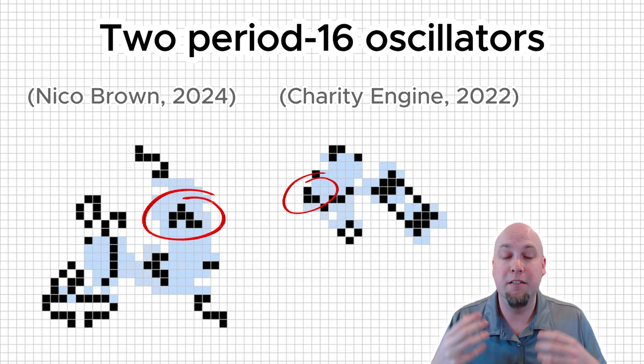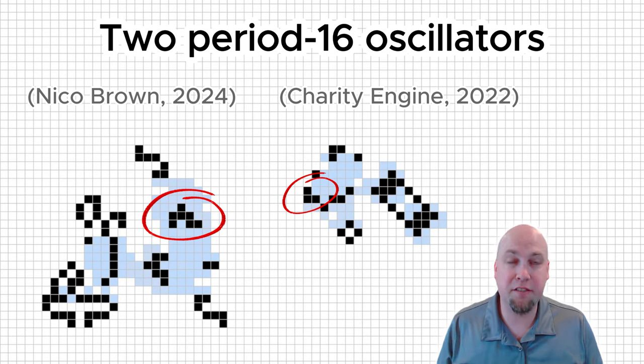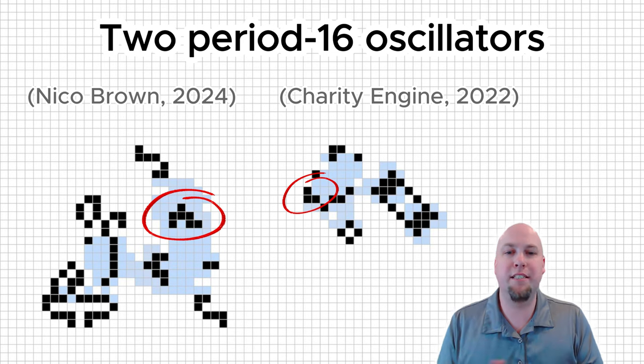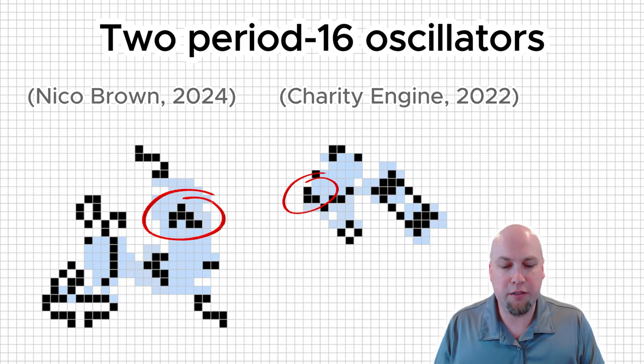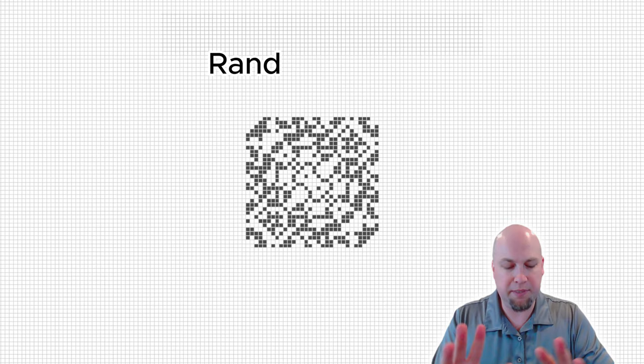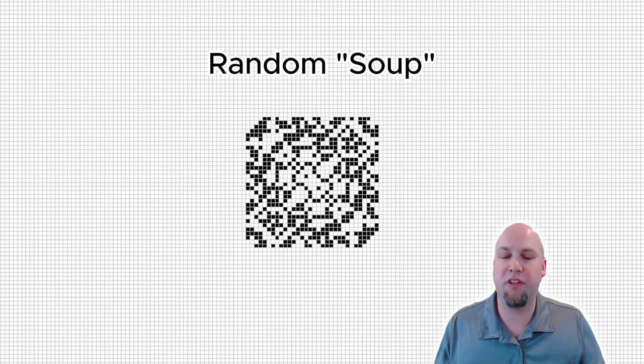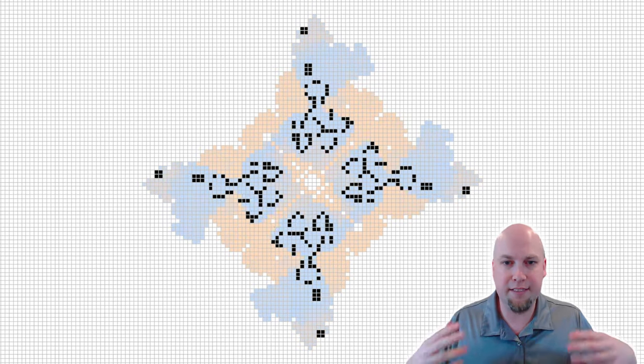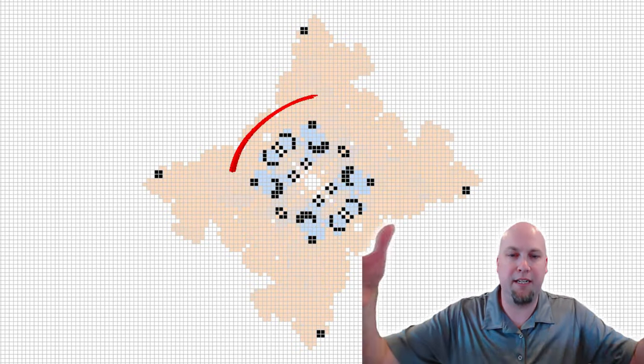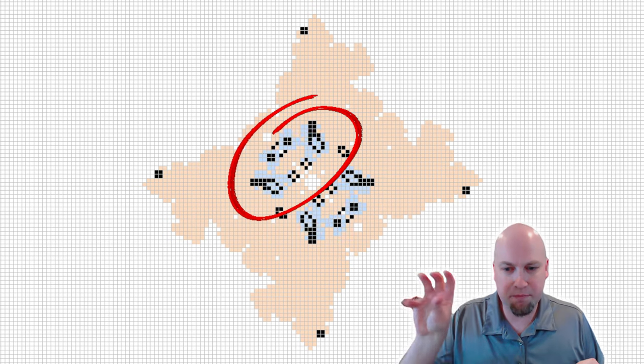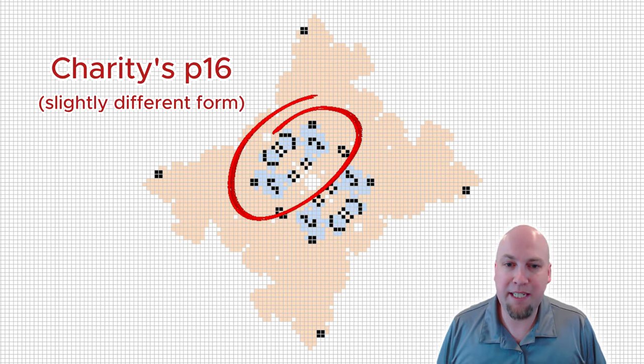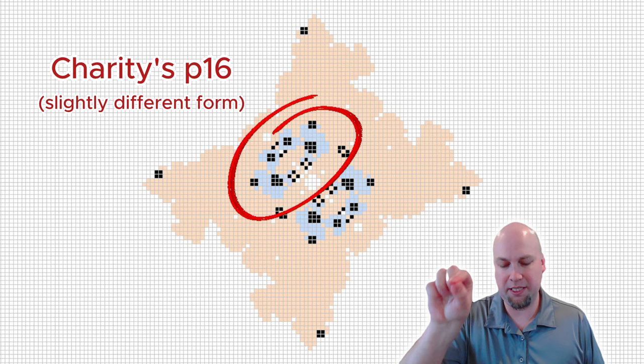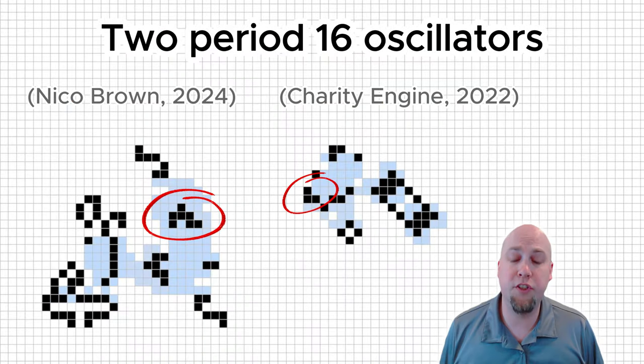And then there's also a known period 16 oscillator that can supply this sort of little three-cell corner piece there. It's called Charity's P-16. It was found by Charity Engine and APG Surge. This is a distributed computing project that burns billions and billions of randomly generated soups every day, so just randomly drawn patterns. It lets them evolve for thousands of generations until they stabilize. And then it looks for new patterns in this random assortment that comes out of these soups.